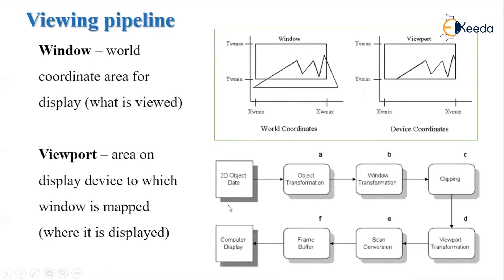In the viewing pipeline, first we take any object data. The object consists of various dimensions, so we take that 2D object data. Then we perform the transformation on that data. Then we perform the window transformation — suppose this is the scene which we have seen, and we have selected this particular part for the window, which is a rectangular area. So we perform the transformation on that. We clip the part which we want to display on the display device, so clipping is done. After that, viewport transformation, then we will display it on a display device.